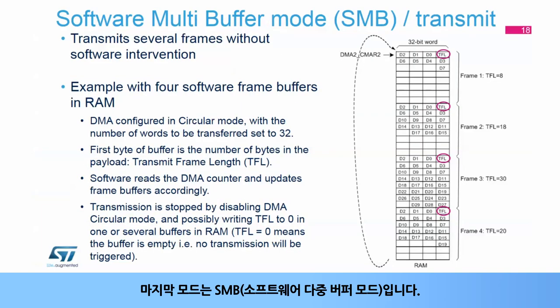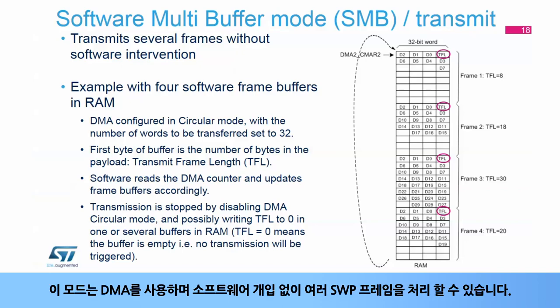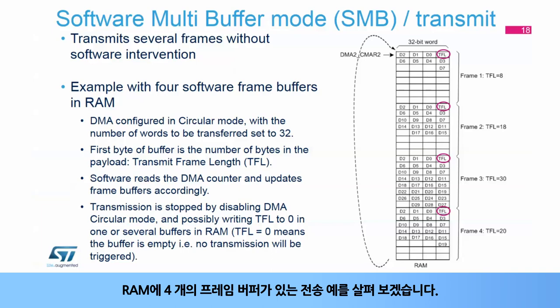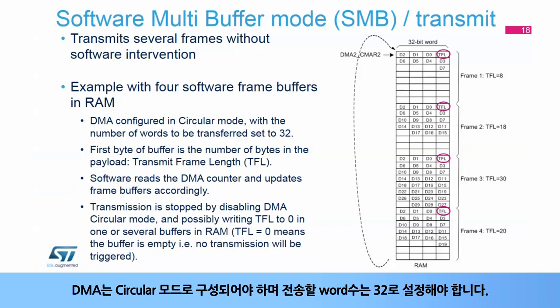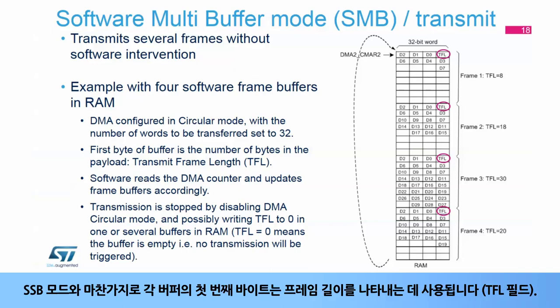The last mode is software multi-buffer mode, or SMB. This mode also uses the DMA, and several SWP frames can be handled without software intervention. In this example of a transmission with four frame buffers in RAM, 32 bytes are always reserved for each frame regardless of the payload size. The DMA must be configured in circular mode, and the number of words to be transferred must be set to 32. As in SSB mode, the first byte of each buffer is used to code the frame length — this is the TFL field.